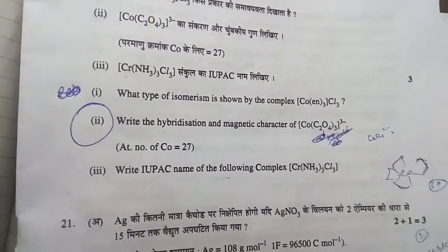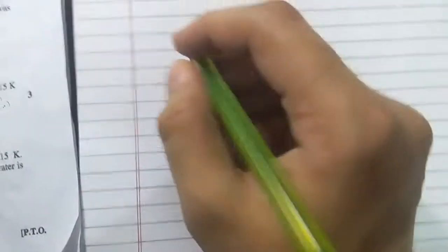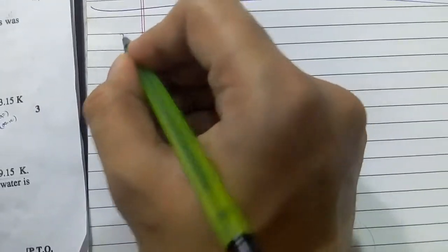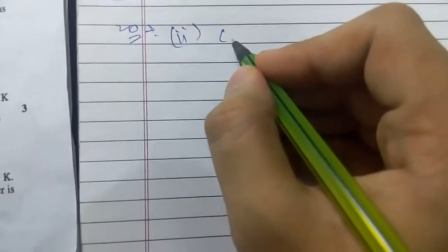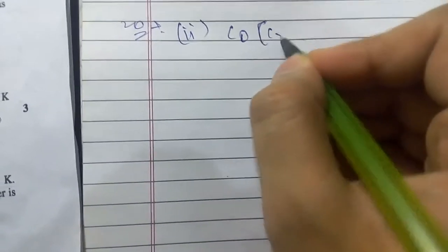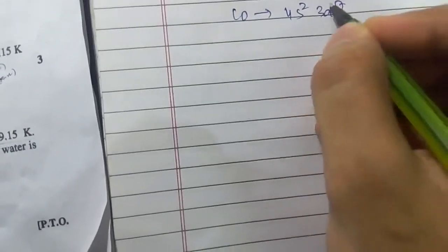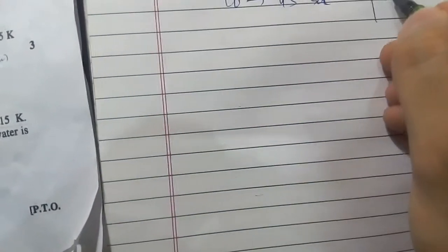So let's quickly see the solution of this question. Let me write the compound here: Co[Co(C2O4)3]. This is the compound. Now in this, Co exists as 4s2 3d7. If you calculate the oxidation state, x minus 2 times 3 equals minus 3, and x comes out to be 3.